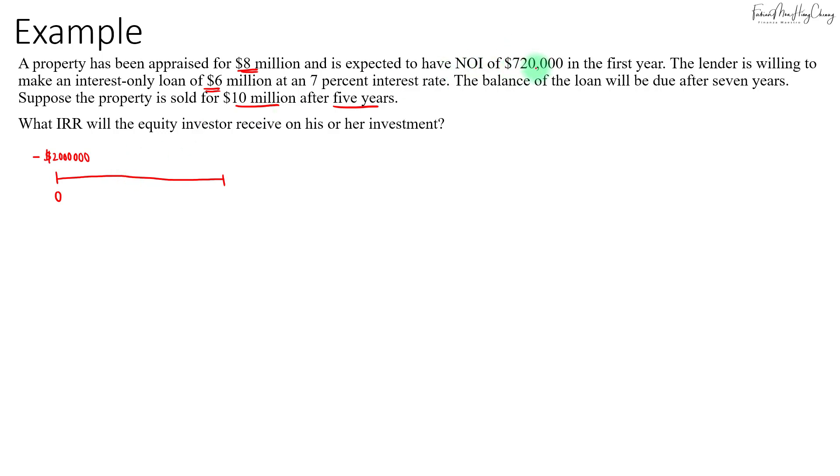Every year you will get a net operating income of $720,000, but then you have to service the interest. The interest here will be the $6 million loan multiplied by 7%, which comes up to $420,000 per year. So the net cash flow every year will be your NOI minus the interest: $720,000 minus $420,000 comes up to a net of $300,000 every year for five years.